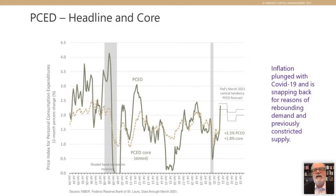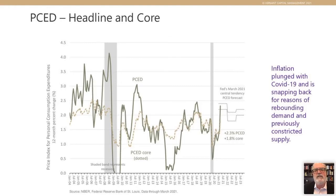There are two types of inflation typically discussed. The PCE index, which is another measure of inflation, is split into headline and core. The headline inflation number includes food and energy, and the core measure excludes food and energy, because food and energy prices in the short run can be much more volatile. In this chart, the headline in dark green has bigger highs and bigger lows than the gold dashed line, which is the core measure. The core measure more accurately captures long-term trends.